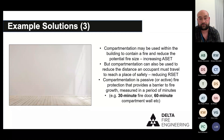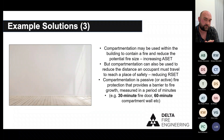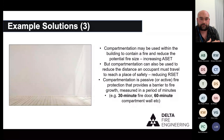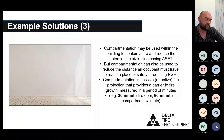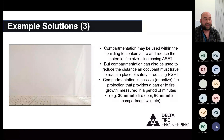Compartmentation is generally passive — though we can have active compartmentation too. It's a fire barrier that provides protection against fire growth. Importantly, it's measured in a period of minutes: fire doors and compartment walls rated at 30, 60, 90, 120, or 240 minutes. That's how we grade these elements of passive fire protection in buildings. When I've got my professional hat on, I rely on compartmentation quite heavily in my fire engineered solutions.